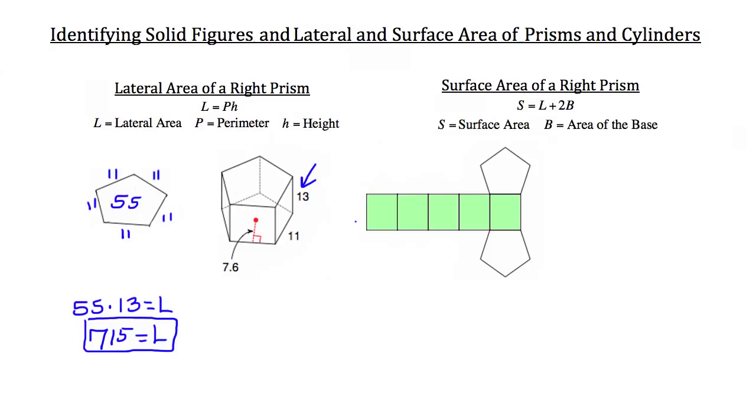So each one of these has a side length of 11 and a height of 13, which means they each have an area of 143 units squared. And if you multiply that by five, you'll get our 715 square unit lateral area.